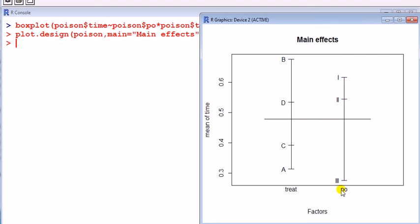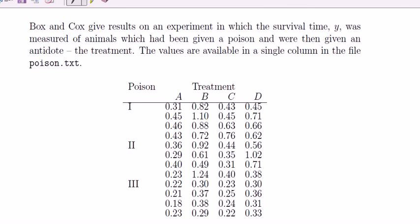Likewise, for the poison here, which one is most potent? It seems like 3 is, because if you take 3, the mean time of survival is lower than for the other two. This horizontal line here is the overall mean. So it's the mean across all observations, across all combinations. In other words, it's the mean of all the numbers here.